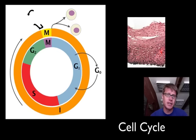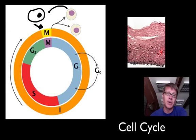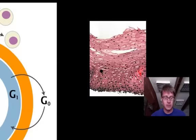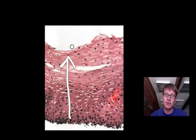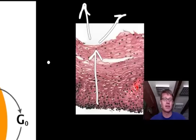Let's look at the cell cycle. A cell enters the cell cycle as one cell and exits as two cells. Each of those cells can go back into the cell cycle — that's how we make all the cells in our body. For example, skin cells are created new, migrate up to the surface, and we lose skin cells at the top, but we keep replacing them using the cell cycle.